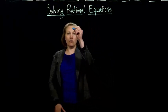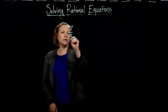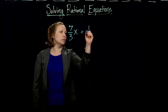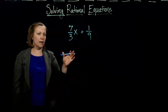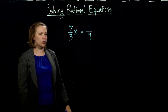So one example would be something like 7/3 times x equals 1/9. So we have an equation that has some fractions in it. We would call this a rational equation.